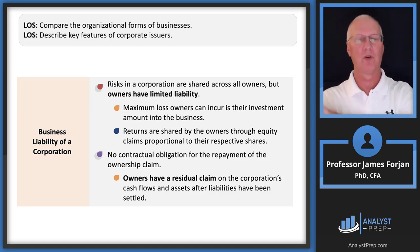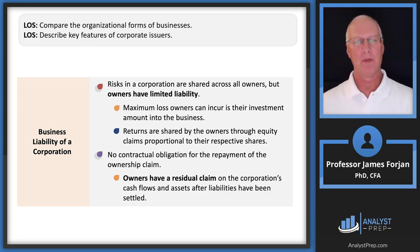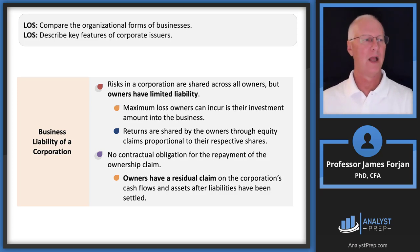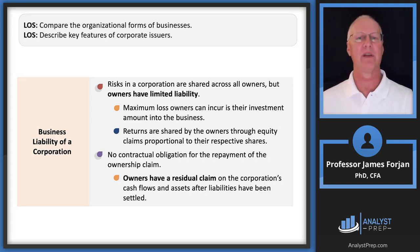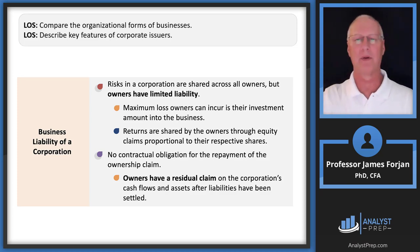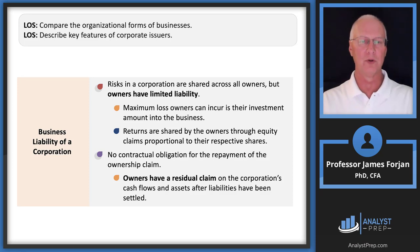The risks in a corporation are shared by many people on the right-hand side of the balance sheet, but owners have limited liability. If you invest $10,000 in — let's say Enron stock — and you bought $10,000 in Enron in 1997, by the year 2000 that $10,000 would have been worth maybe $2 or $3. The most you can lose is the amount that you invest.